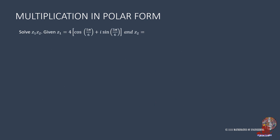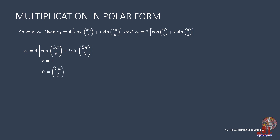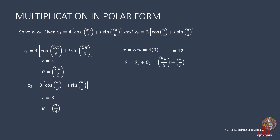The same procedure is followed in the next example of finding the product z1 times z2, where z1 is 4 times cosine of 5 pi over 6 plus i sine of 5 pi over 6. z1 has r of 4 and theta of 5 pi over 6. z2 contains an absolute value of 3 and an argument of pi over 3. r is then 4 times 3, which is 12. Theta is 5 pi over 6 plus pi over 3; with LCD, the second argument converts to 2 pi over 6, giving a resulting theta of 7 pi over 6.